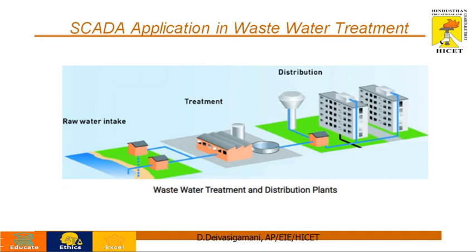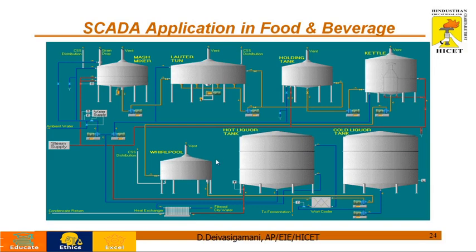This is a SCADA application in a wastewater treatment plant. All processes are lined up here — processes like backwashing, filtering, sedimentation, water level indication, temperature control, and pressure control — all have been completely interfaced with SCADA for automatic operation. The complete water treatment process is handled in this SCADA system. This is the SCADA front end for food and beverage industries, showing different clients and boiler areas where all valves are connected. If any malfunction occurs, the valve status is directly indicated on the screen so that corrective action can be taken quickly.